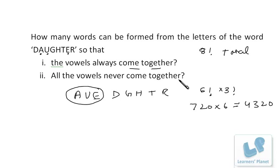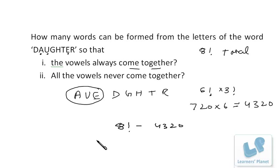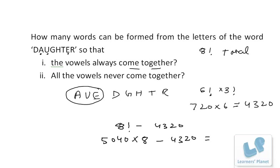For Case 2, when all vowels never come together: in total we have 8 factorial arrangements of DAUGHTER, and in 4320 of those cases all vowels are together. So in the remaining cases — that is 8 factorial minus 4320 — the vowels will never all be together. 7 factorial is 5040, so 8 factorial is 5040 × 8 = 40320, and 40320 minus 4320 = 36000. In competitive exams the answer may be expressed as 8! − 6! × 3!.